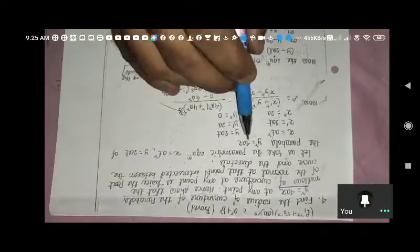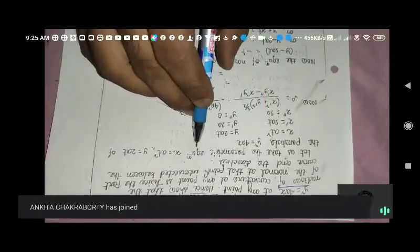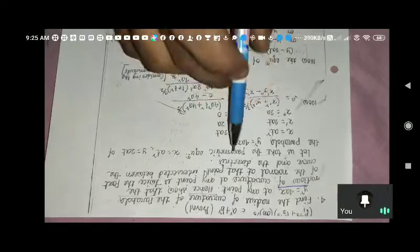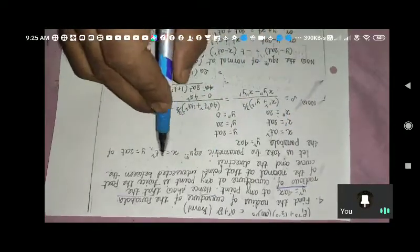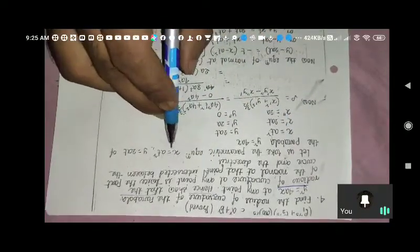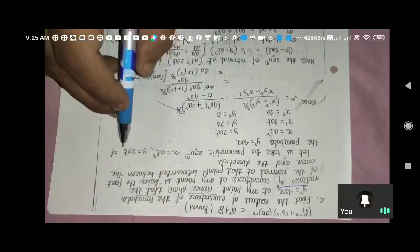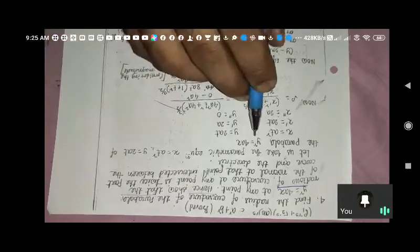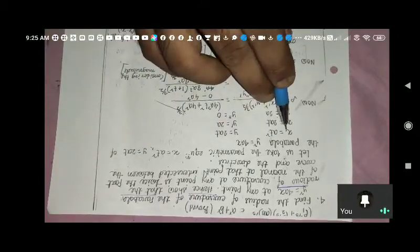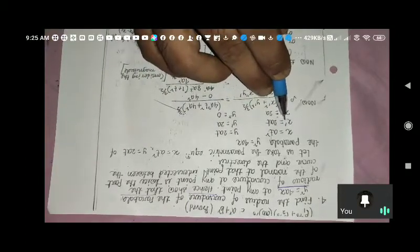Let us take the parametric equation. The parametric equation is x equals at square, y equals 2at, so x equals at squared.